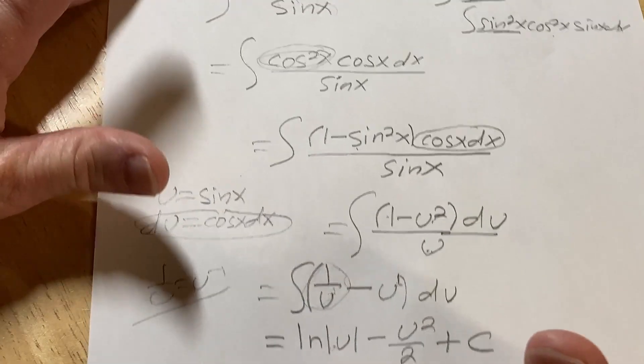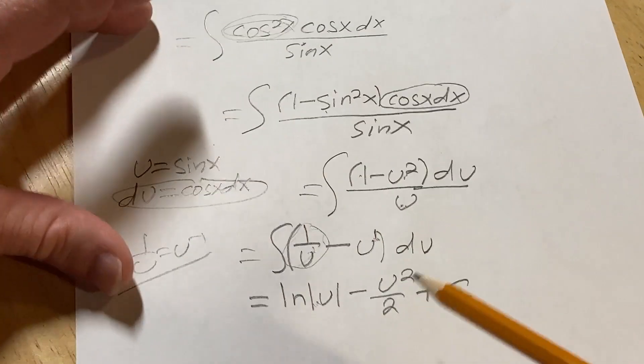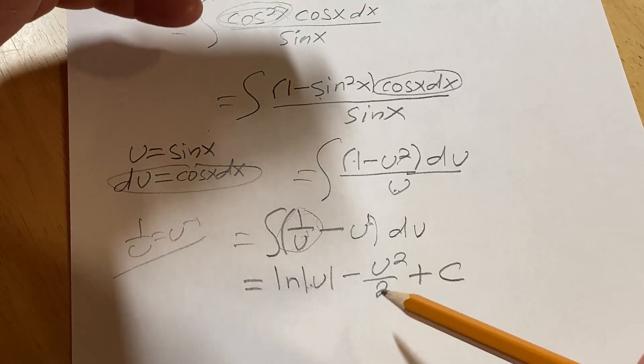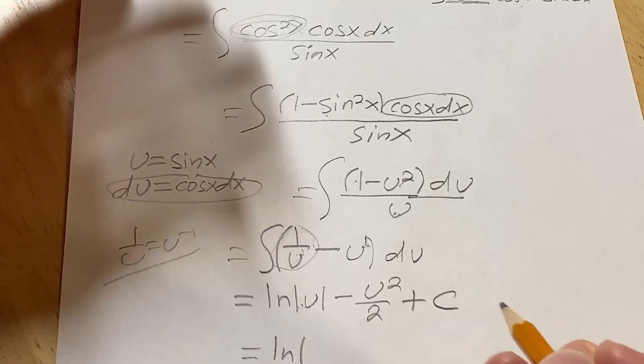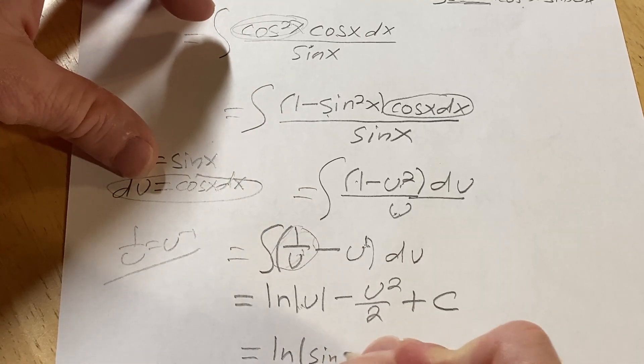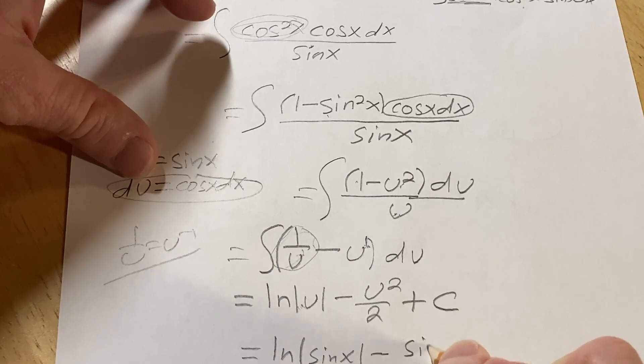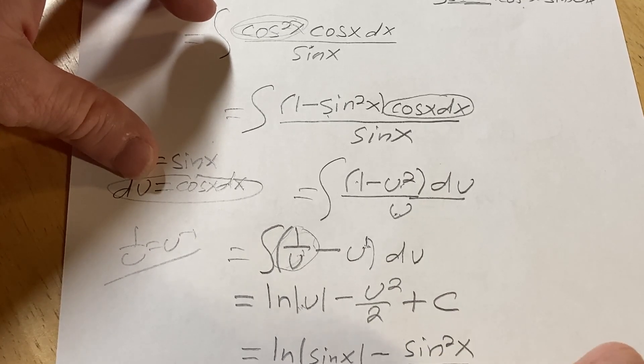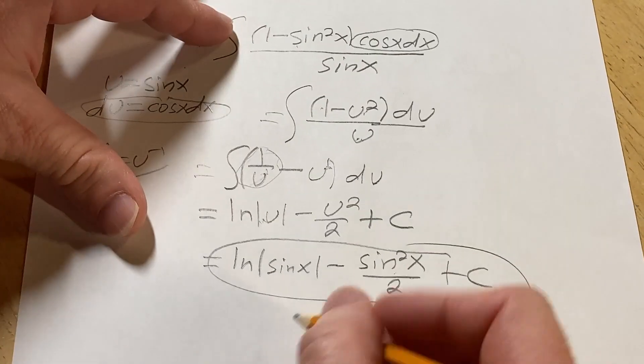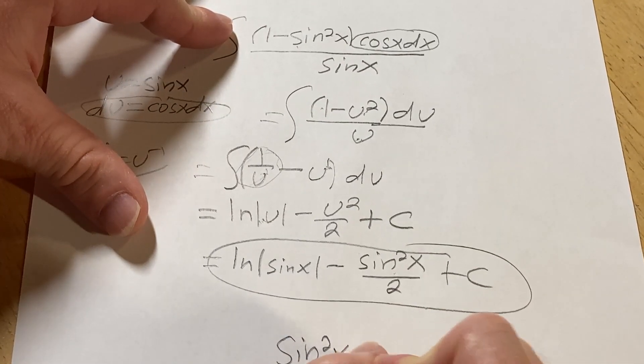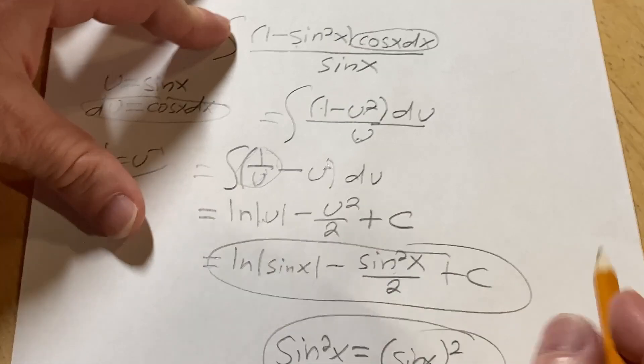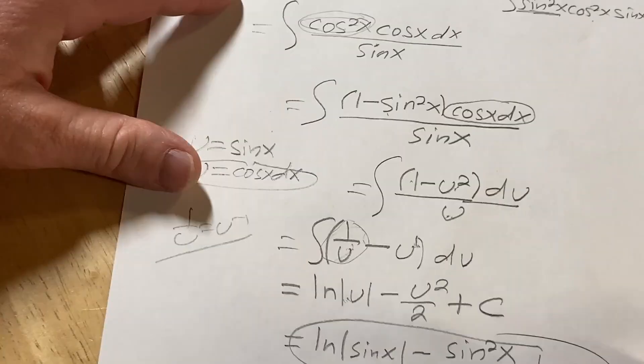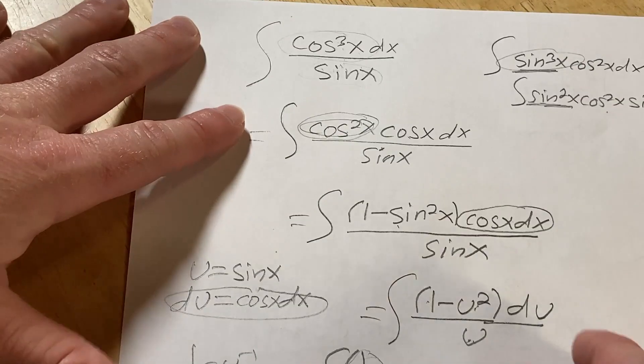But we're not quite done, right? Because the original problem had x's and here we have u's. So you always want to go back to the original variable. So in this case, it's equal to the natural log of the absolute value of sine x minus sine squared of x over 2, plus c. This is shorthand. Sine squared x like this actually means this. And that's the right answer. Looks 100% correct. So that's how you do some basic integration.